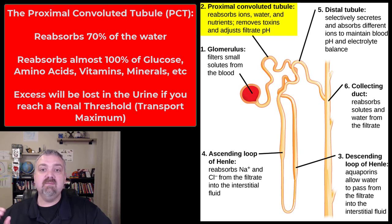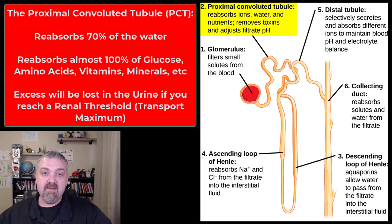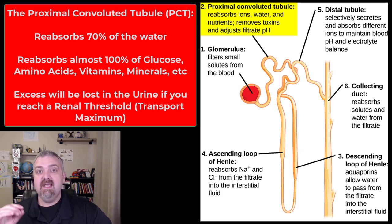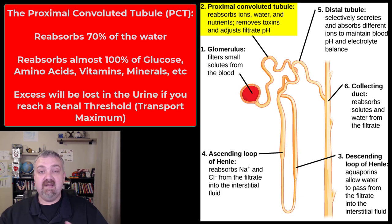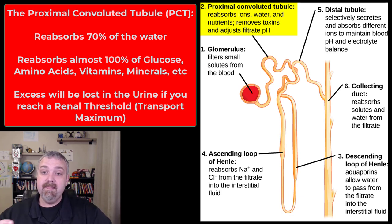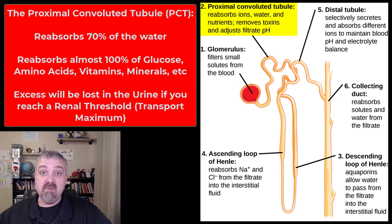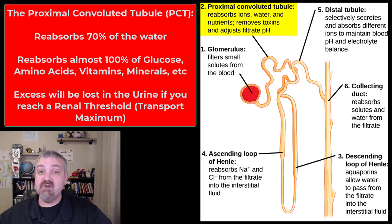Now we're at the proximal convoluted tubule. Its primary function is reabsorption. It reabsorbs 70% of the water we lost — those 50 gallons — and 99 to 100% of vitamins, minerals, glucose, and amino acids: all the good stuff we can't afford to lose. It absorbs 100% unless there's too much of something. So if you're taking high doses of vitamins, don't be surprised to see some vitamins in your urine — that's totally normal.